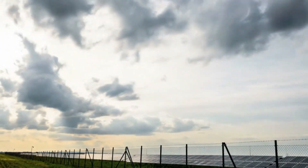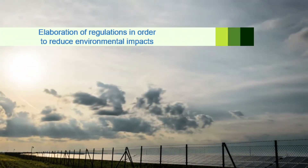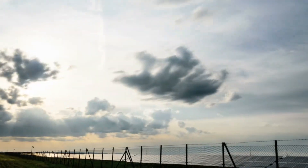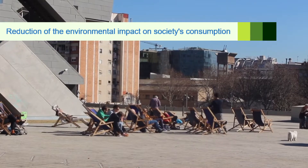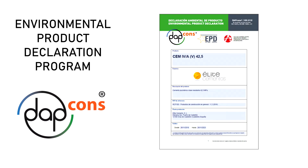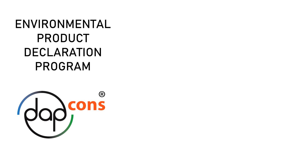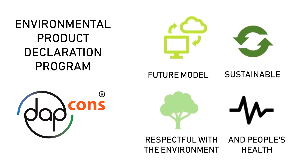On one hand, administrations are increasingly pursuing the reduction of impacts with the development of regulations and, on the other hand, society is more involved in consuming goods and services with less impacts. Therefore, the Environmental Product Declaration Program is a very useful tool to promote the transformation of the construction sector towards a future model, sustainable and respectful with the environment and people's health.